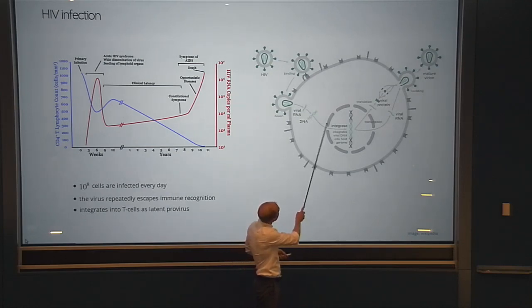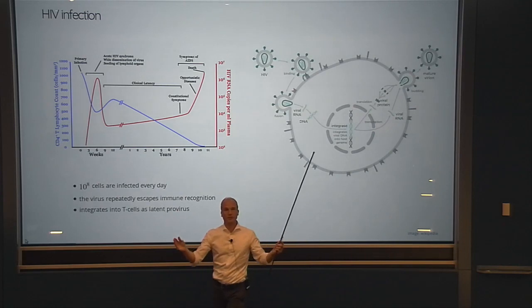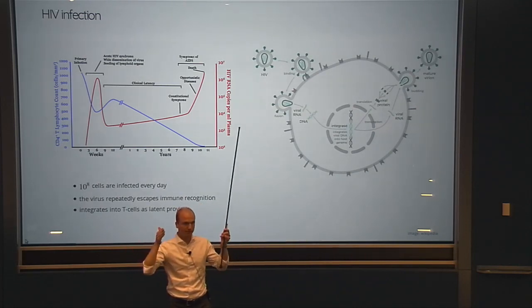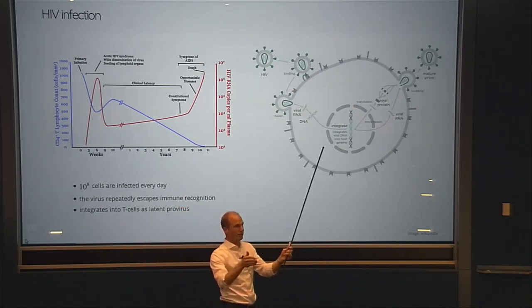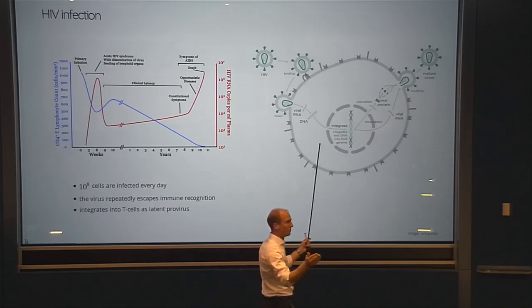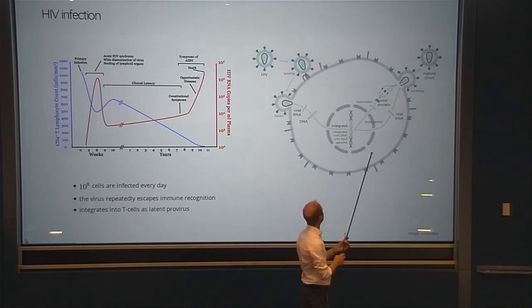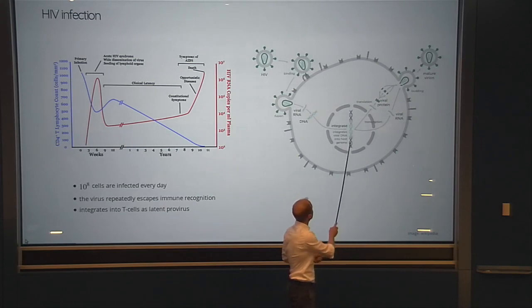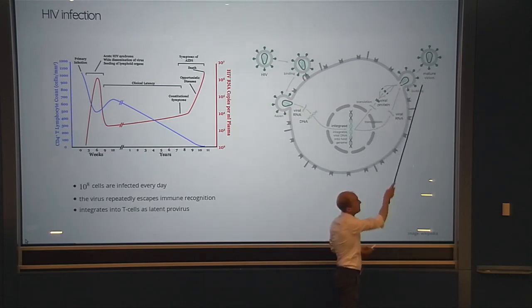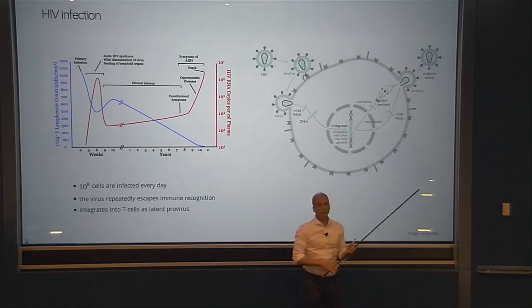Once the DNA is made, it's integrated into the genome of the host cell — the virus genome is put somewhere into the human genome and looks like a regular piece of human DNA, except it produces viral proteins rather than human proteins. From these viral proteins a new virus is made to infect the next cell.